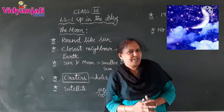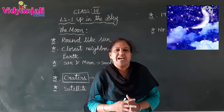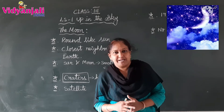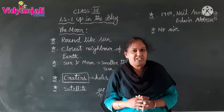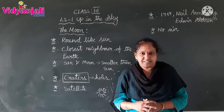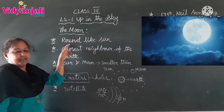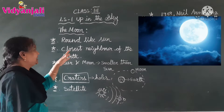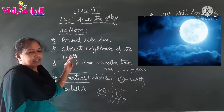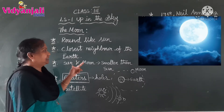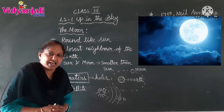Children, did you observe the moon every day at night? The moon is not having its own heat and light. Because of the reflection of the sun, the moon is shining in the night sky. Coming to the first point: it is round like the sun. It is the very closest neighbor of the earth. The moon is known as a natural satellite.